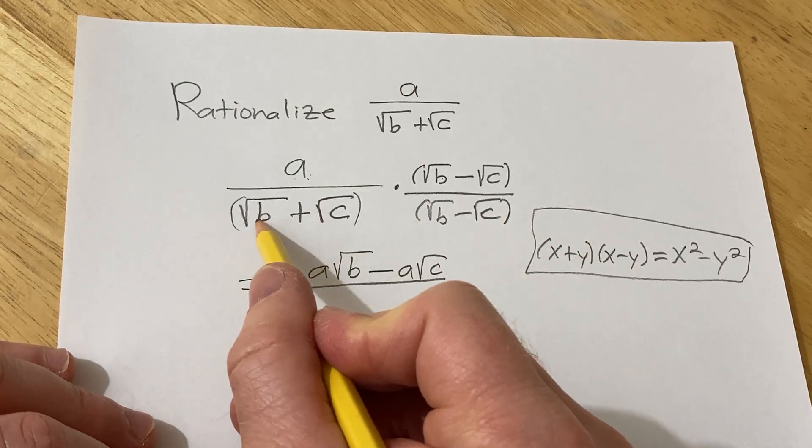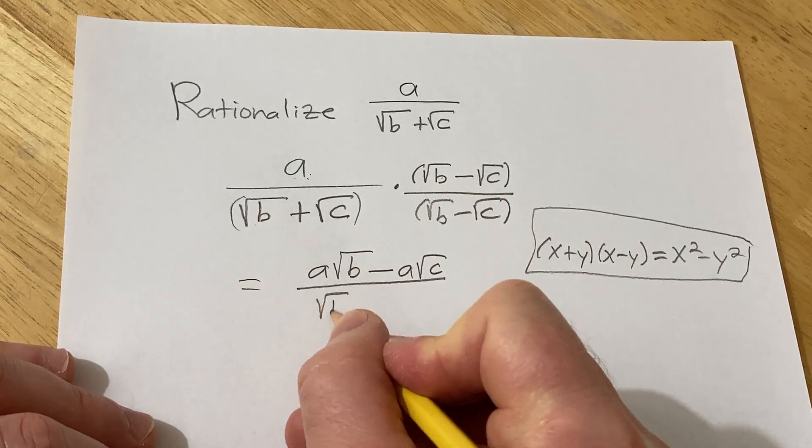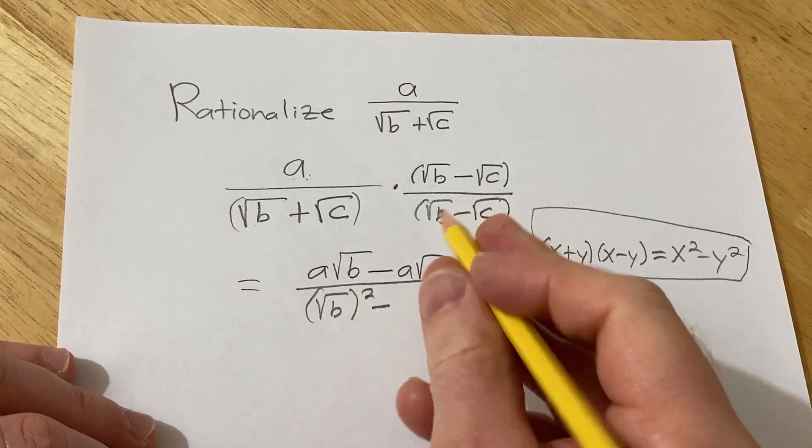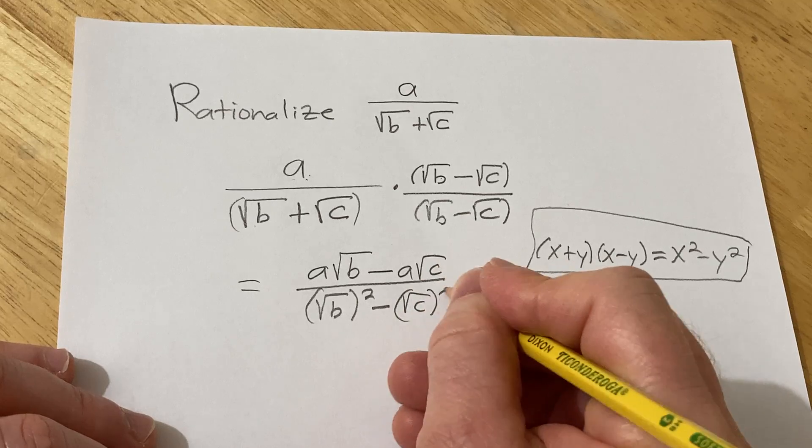So in this case, we square this one, this is our x, so it's the square root of b squared, minus, and then our y squared, the square root of c squared.